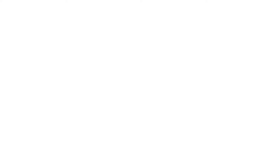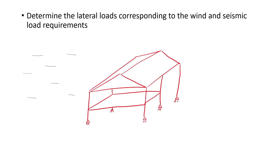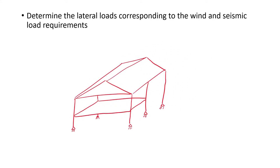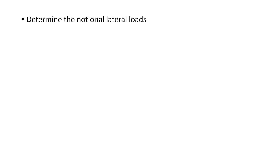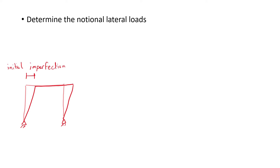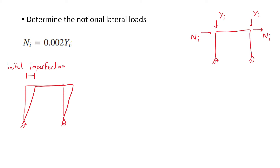The next step is to determine the lateral loads corresponding to wind in both lateral orthogonal directions, as well as the seismic load requirements in both lateral orthogonal directions. Next, we determine the notional lateral loads, which are intended to account for the overall effects of out-of-plumb geometry imperfections, and apply them either as minimum lateral loads in gravity-only load combinations or as additive lateral loads for all load combinations.